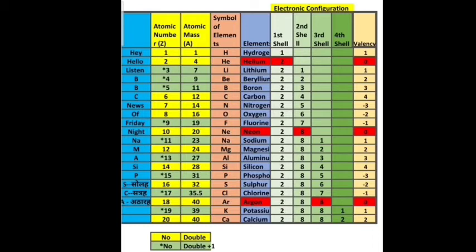Continuing, the configurations go: 2,2 — 2,3 — 2,4 — 2,5 — 2,6 — 2,7 — and 2,8. The second shell can accommodate a maximum of 8 electrons. For sodium with atomic number 11, the configuration is 2,8,1 — two in the first shell, eight in the second, and one moves to the third shell.